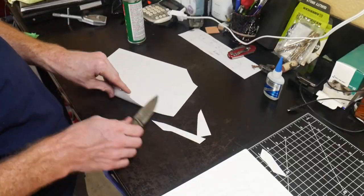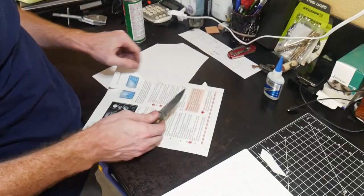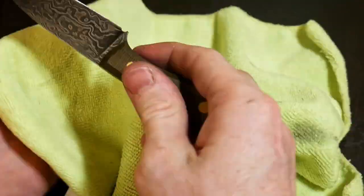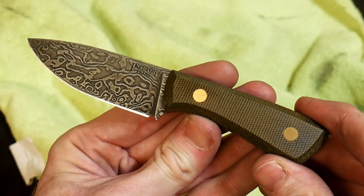Then using the power strop on my Wynn machine, I will strop both sides of this edge. At this point the knife is shaving sharp easily. I even cut some pretty lightweight paper there and we are good to go. I sprayed it down with some Ballistol and then this is the finished product.